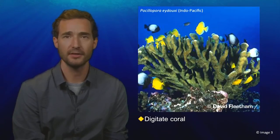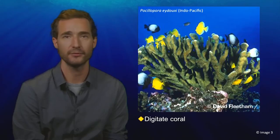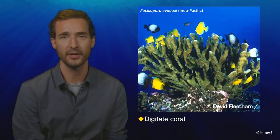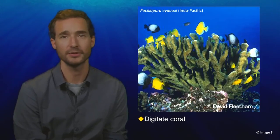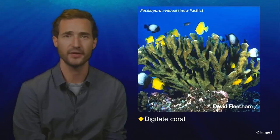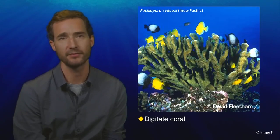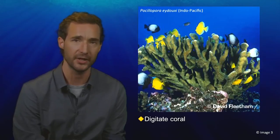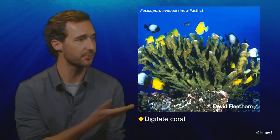The next life form is called digitate. Although at first they can look similar to branching corals, the difference is that digitate corals do not divide more than once or twice. Branching corals are often a mess of tangled branches, but with digitate corals you can usually see right through the base, like in this picture.